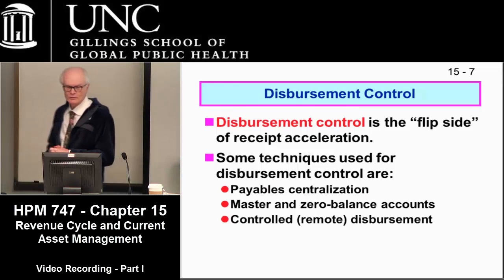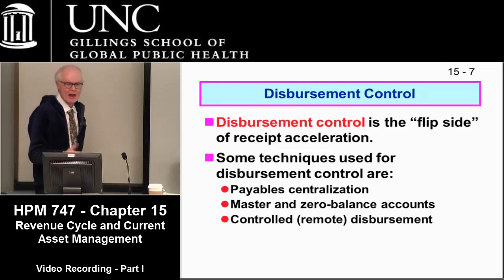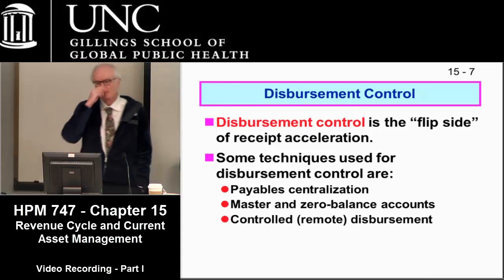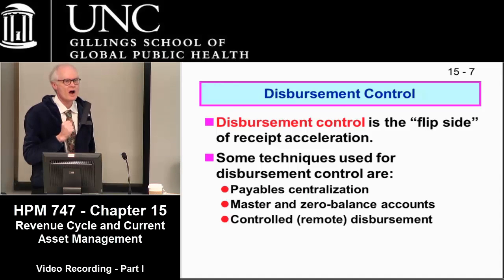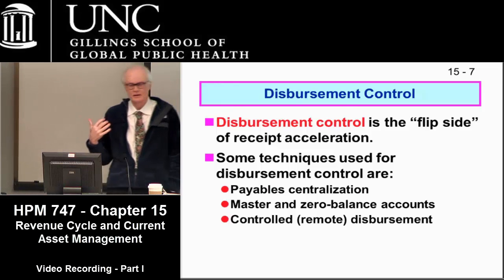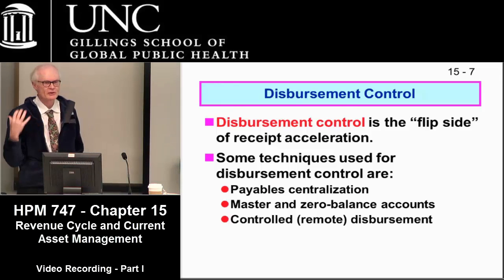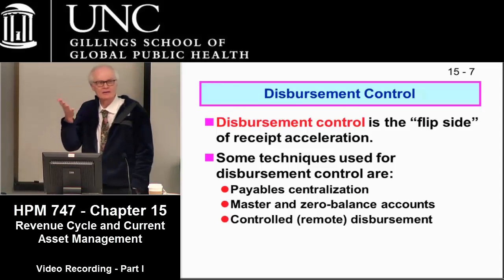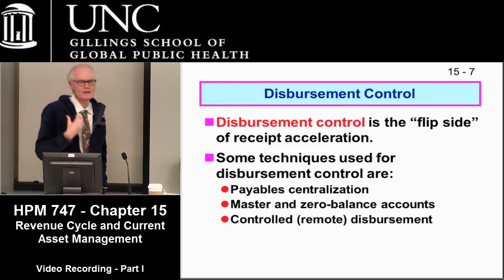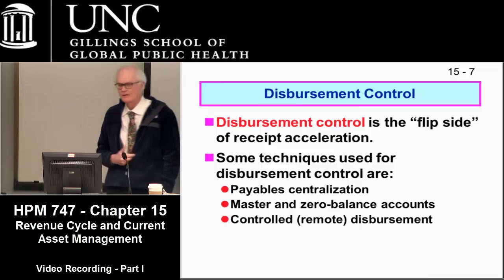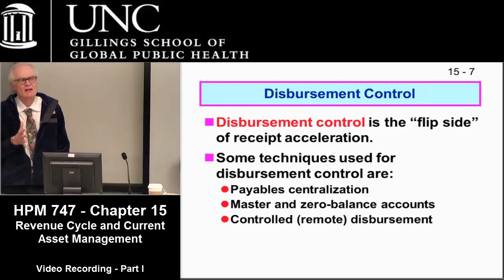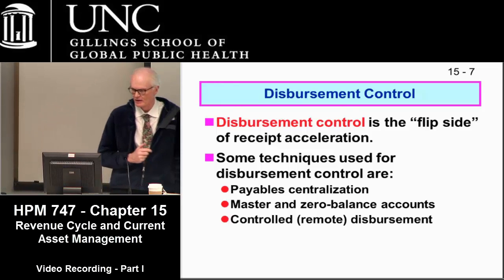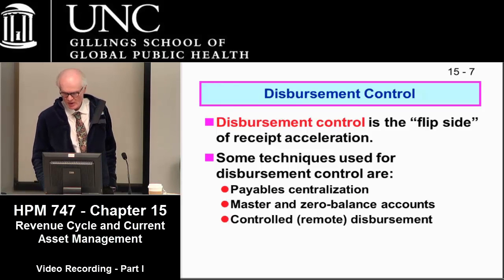Disbursement controls are the other side — slowing down disbursements as much as reasonably possible. Payables centralization is used a lot by health systems. A system with four, five, or ten hospitals has expenses paid centrally by the parent organization, achieving economies of scale and standardizing the time between when a bill is received and paid, minimizing cost.